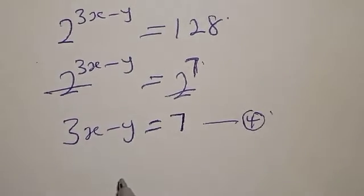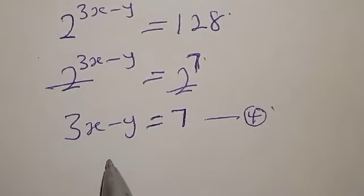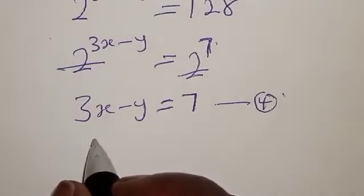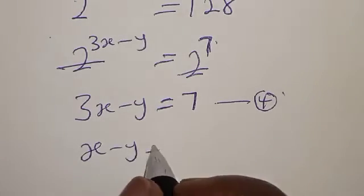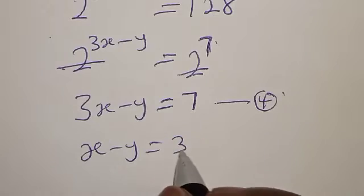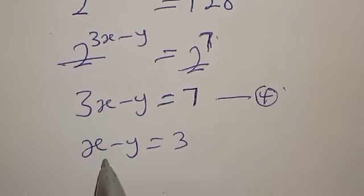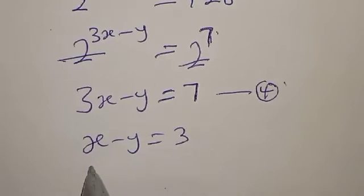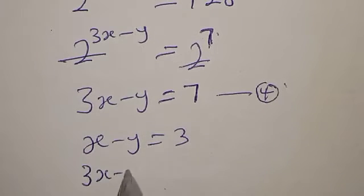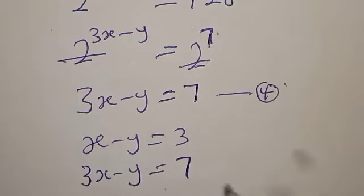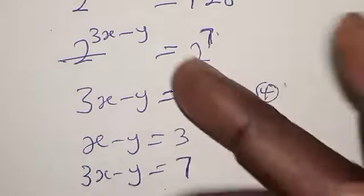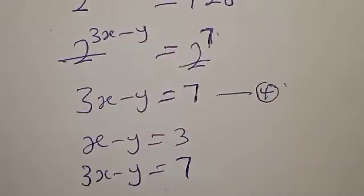Let's compare equation 3 and equation 4. Equation 3 is x minus y equal to 3, and equation 4 is 3x minus y equal to 7. Let's use elimination to solve this very fast — this is a simultaneous equation.